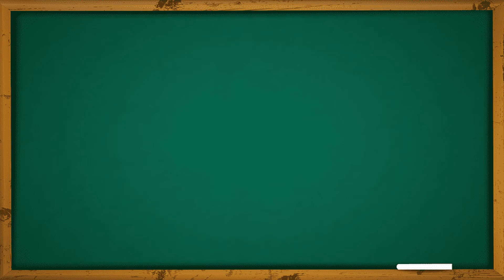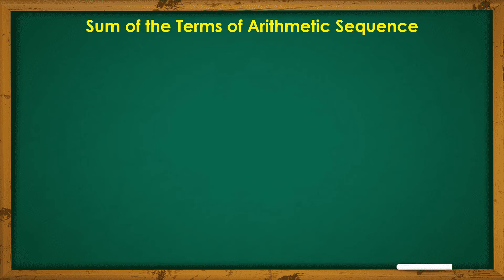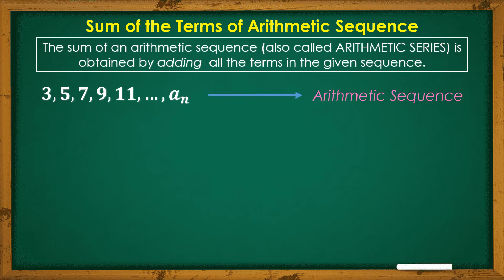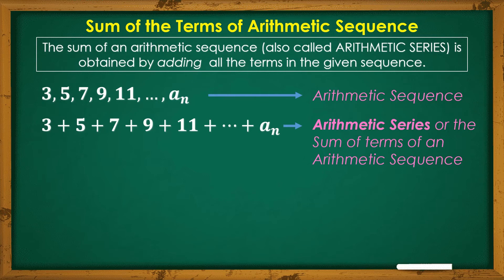Now, to continue our discussion for Module 3, let's talk about the sum of the terms of an arithmetic sequence. The sum of an arithmetic sequence, also called an arithmetic series, is obtained by adding all the terms in the given sequence. For example, the arithmetic sequence 3, 5, 7, 9, 11, and so on to the Nth term becomes an arithmetic series when we simply add all of the terms. There are formulas we will use for different conditions or situations in problems related to arithmetic series.